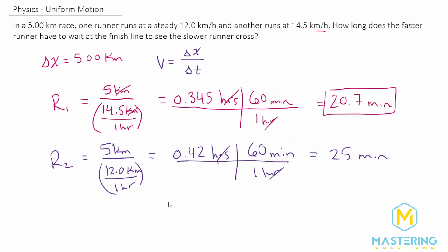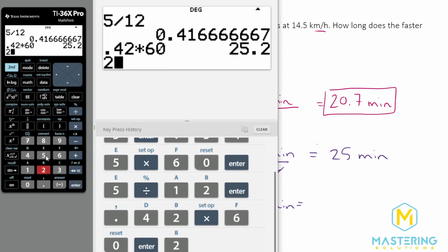So now the difference between them to figure out how long they're waiting, we have 25 minutes for the slower runner minus the faster runner's time of 20.7 minutes gives us 25 minus 20.7.